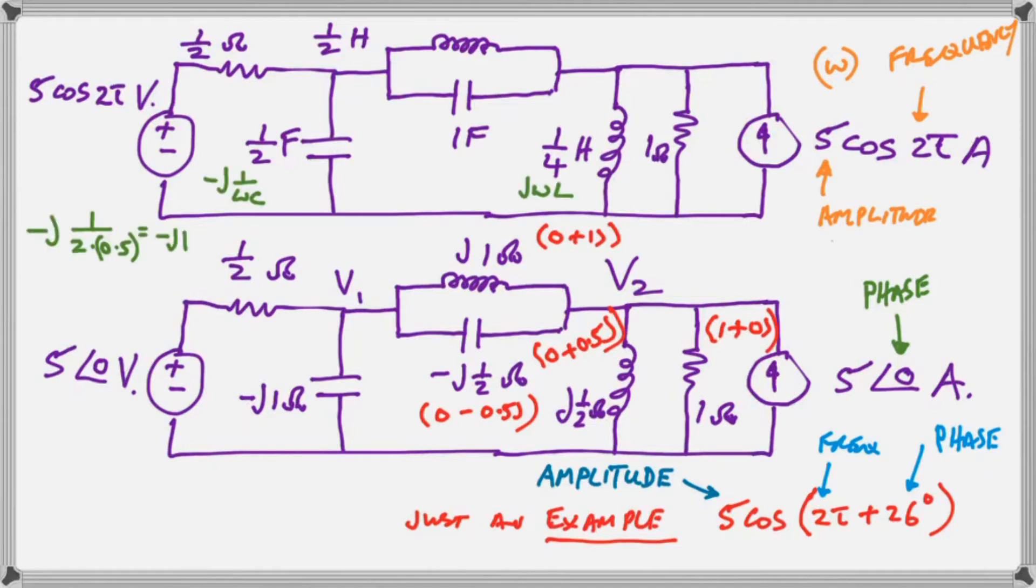Now, the formula that you use to calculate the J value or imaginary value from the inductor is just omega L. As shown, and the formula that you use for the capacitor is 1 over omega C. So, you just plug in your values and that is where the numbers come from.